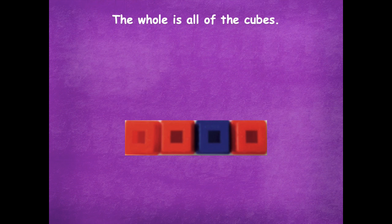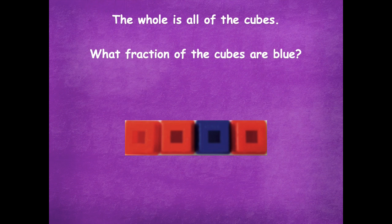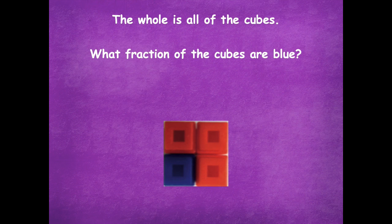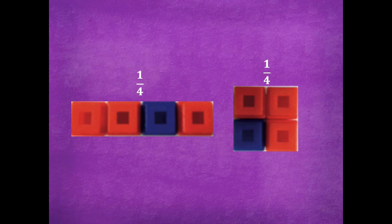Alright friends, the whole is all of the cubes that we see here — we have the red and the blue. What fraction of the cubes are blue? Well, there are four parts and one is blue, so that's one fourth. The whole is all of these cubes; four equal parts, one is blue — that's one fourth.